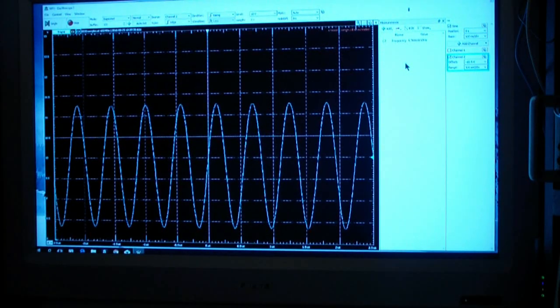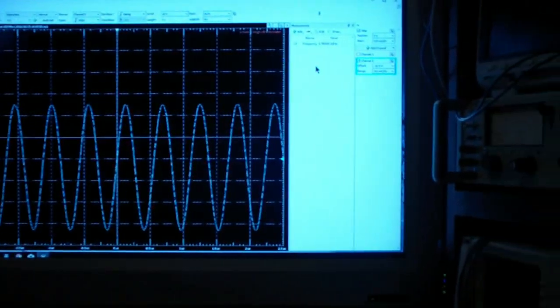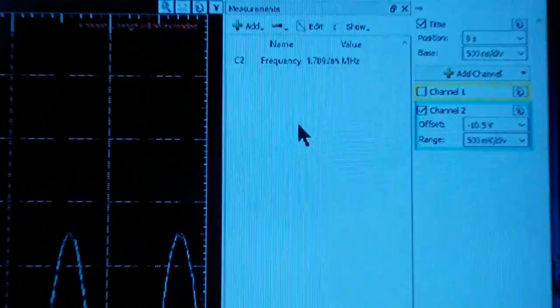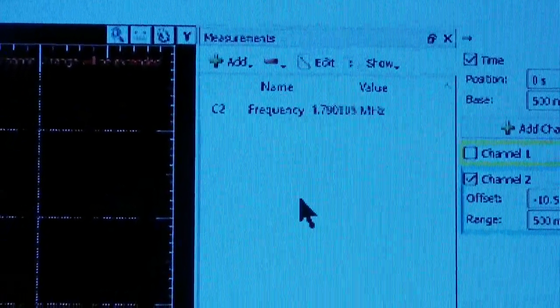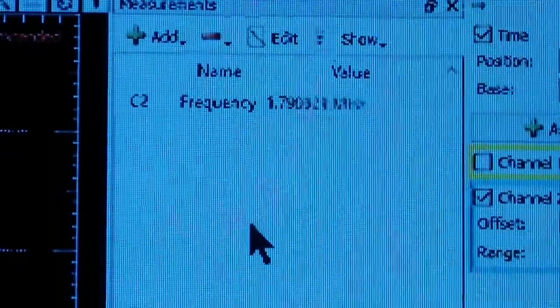On the screen is a display of the Analog Discovery 2 oscilloscope channel 2, and the signal that it's displaying is a sine wave at around 1.8 megahertz. The purpose of all of this is to demonstrate the use of the Analog Discovery in circuit design.